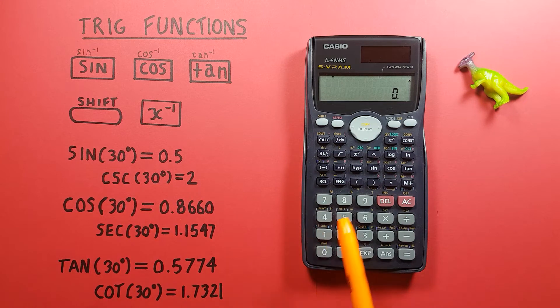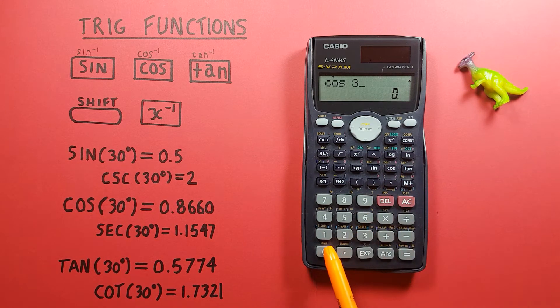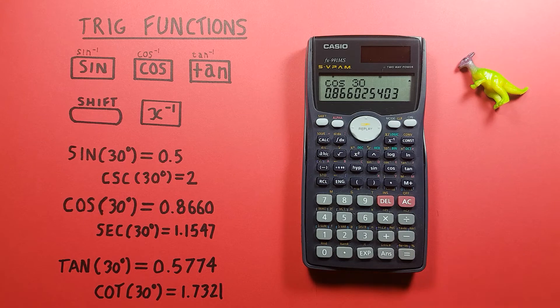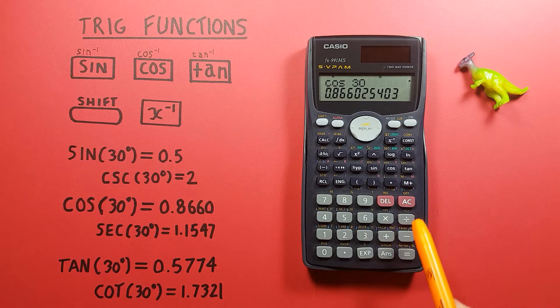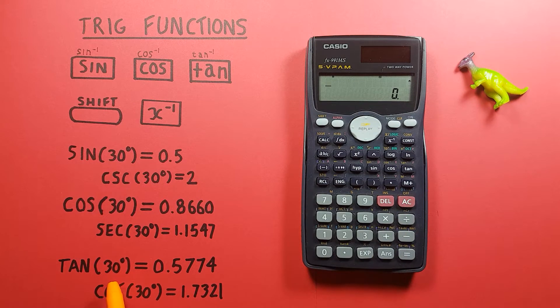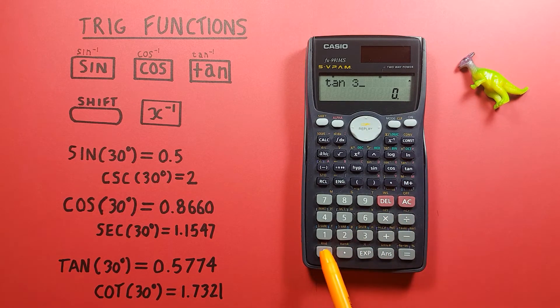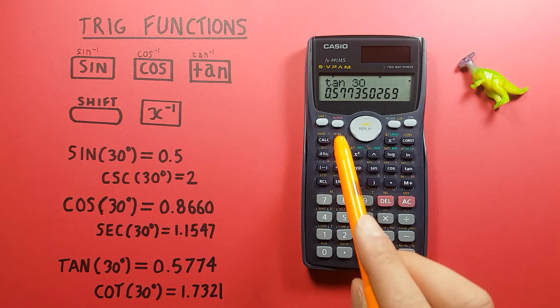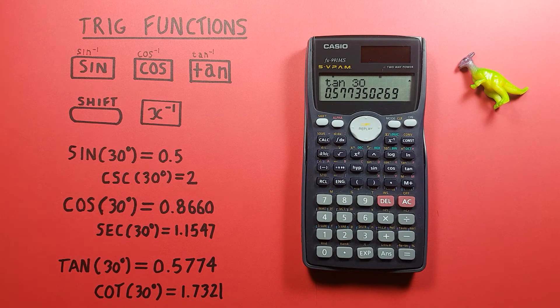Cosine of 30, again cos 30 equals 0.8660, and tangent of 30, tan 30 equals 0.5774 rounding to 4.